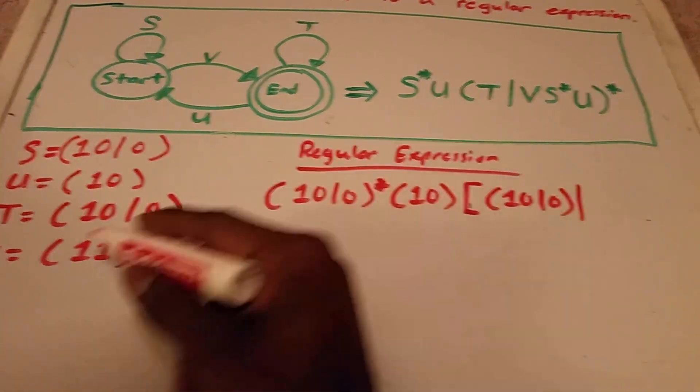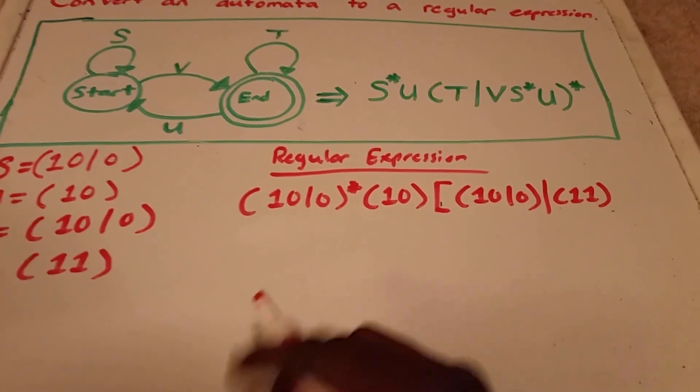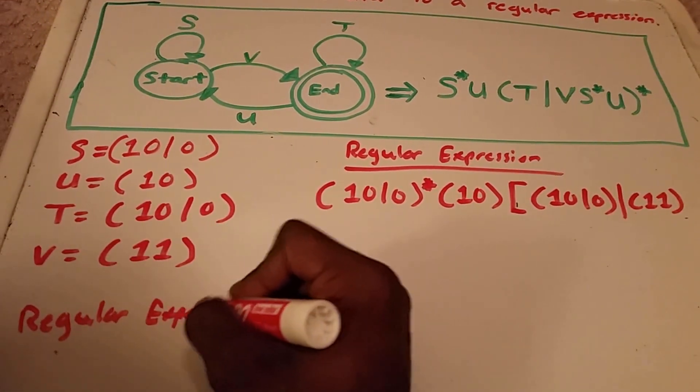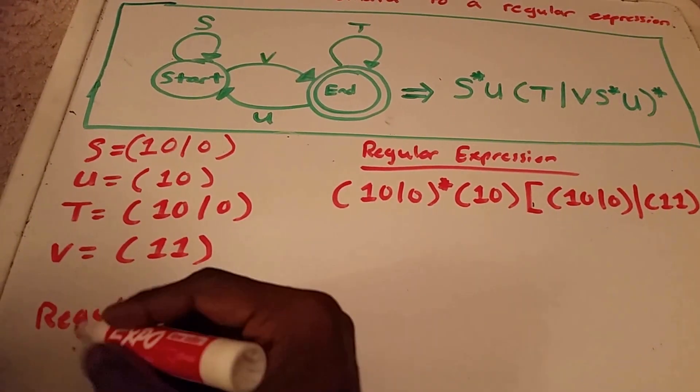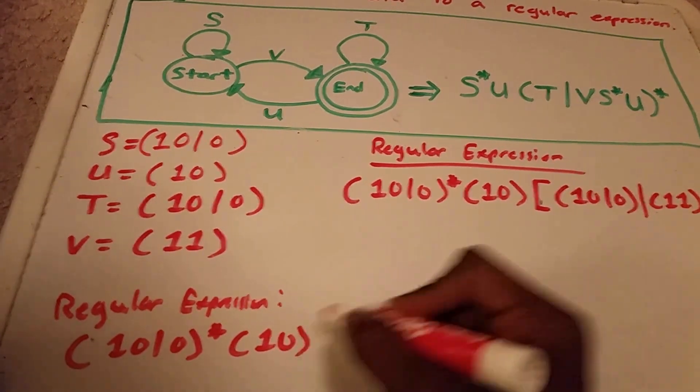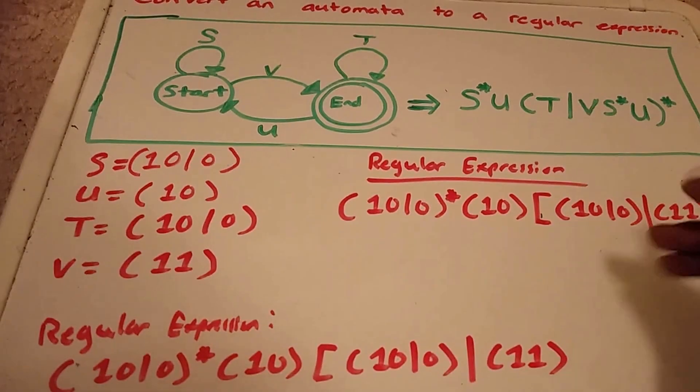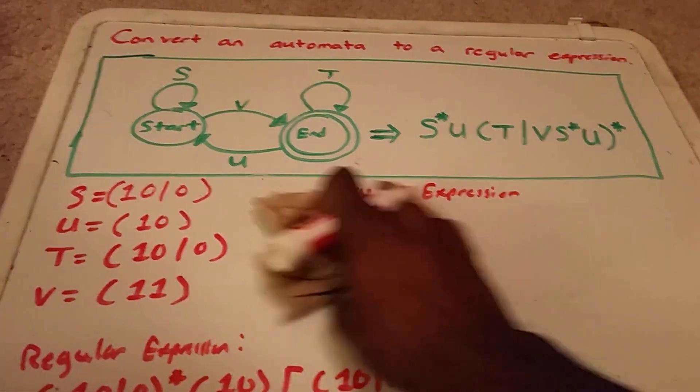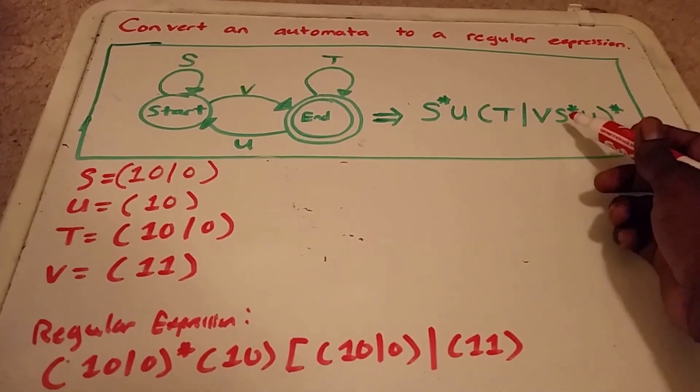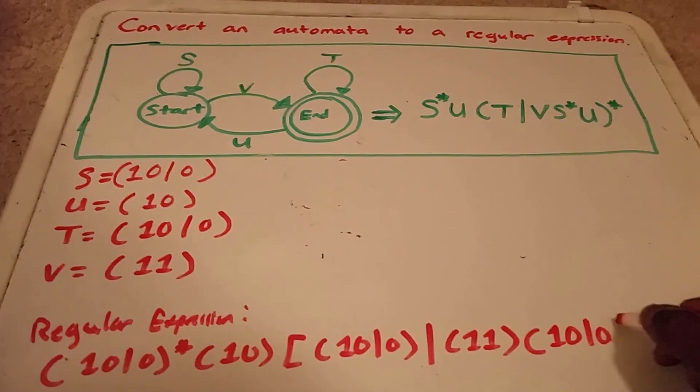And we have our V next, and our V is one, one. We have our S star again. Looks like I'm going to run out of room. Let me write this down here. Regular expression. I'm just going to rewrite this here, because it looks like I'm going to run out of room up top. Okay, and now we can continue. So, we have our OR, one, one, which is our V. So, now we have our S star, which is one, zero, or zero. So, we're going to have one, zero, or zero, with a star.